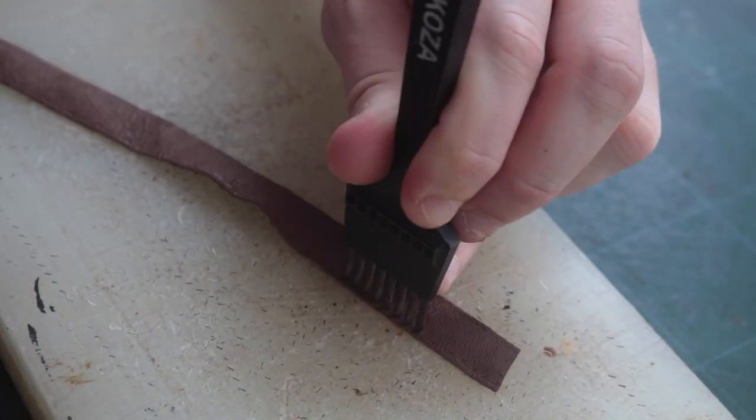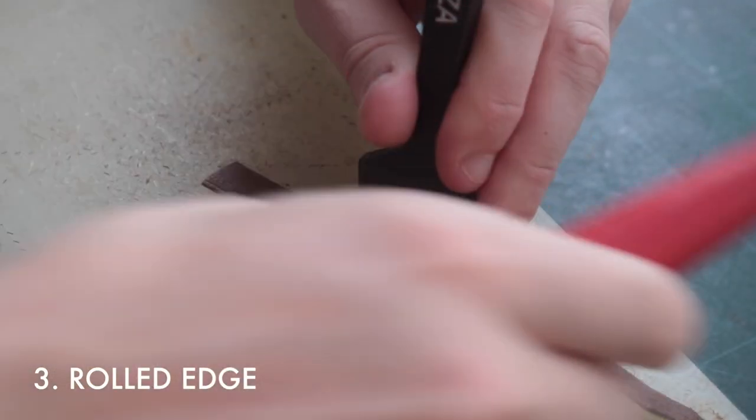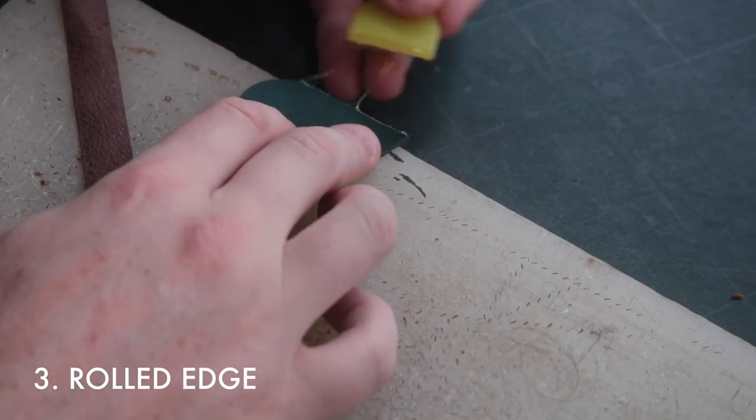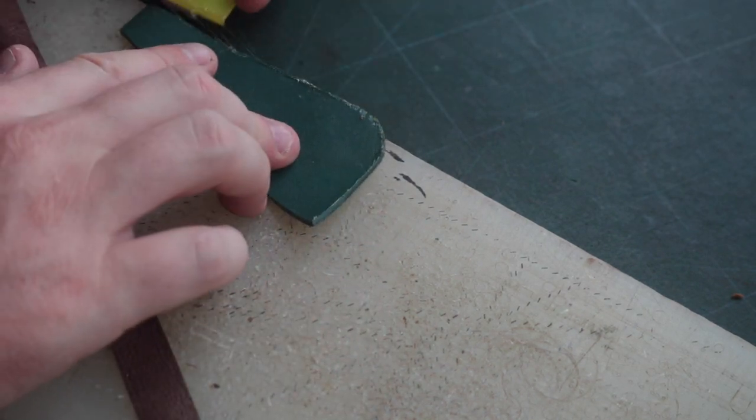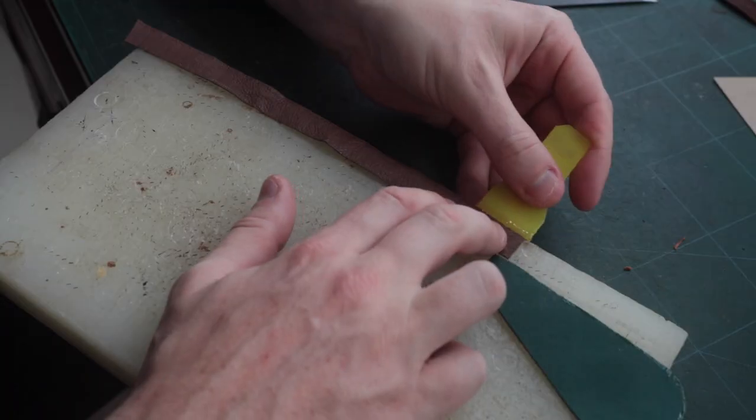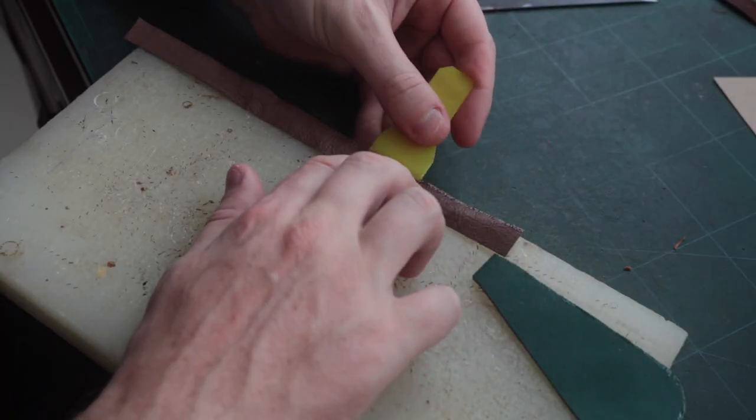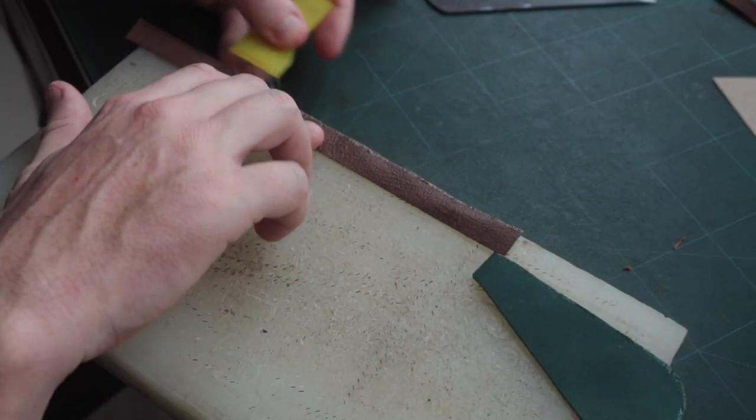Let me now show you the rolled edge technique. I'm using a 16 millimeter stripe and I punched it 2 millimeters from the edge. I will apply it with the other part, grain side facing grain side.